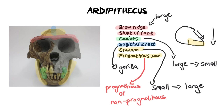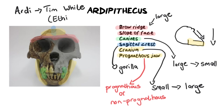The well-known fossil associated with Ardipithecus is Ardi. Ardi was discovered by Tim White and was discovered in the country of Ethiopia. This is an important fact to know especially when describing the Out of Africa hypothesis and how the oldest fossils came from these regions, which supports that theory.